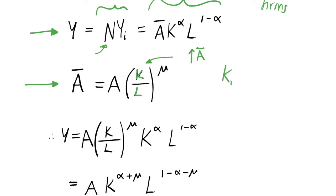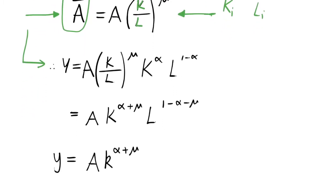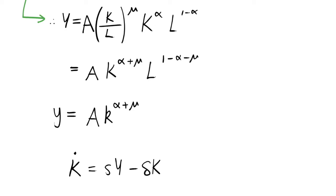A firm can choose k_i and l_i, but these do not feed into A-bar, so an individual firm choosing their inputs does not affect the aggregate level of productivity. However, in the aggregate, these decisions by small identical firms are going to potentially offer increasing returns to scale of production. Let's substitute this A-bar into our production function to get the equation already written out.